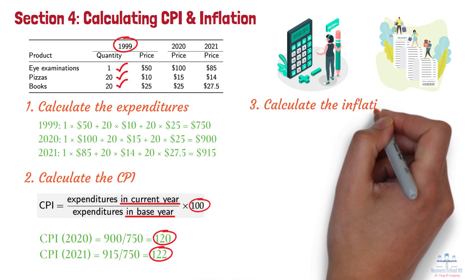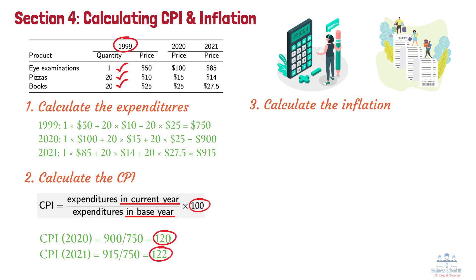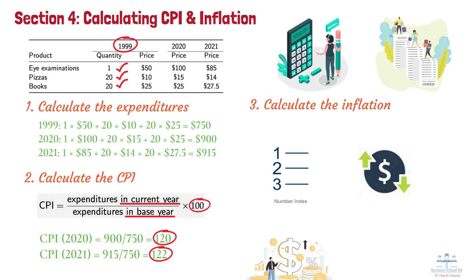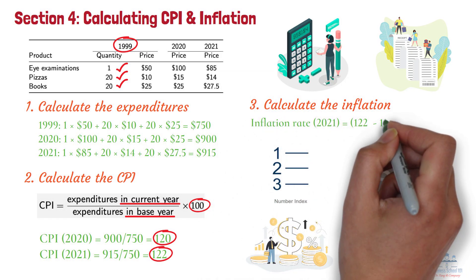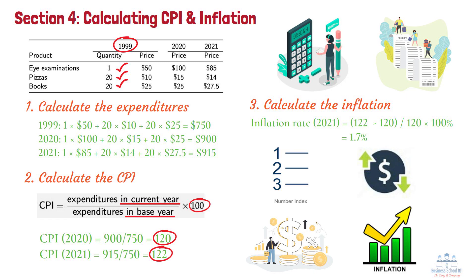Number 3: Calculate the Inflation. CPI values are index numbers — they are not measured in dollars or any other units. The CPI measures changes in the price level over time; it tells us how much the price level has changed, not how high it is in an absolute sense. We measure the inflation rate as the percentage increase in the CPI from one year to the next. For our simple example, the inflation rate in 2021 is the percentage change in the CPI from 2020 to 2021, which is 1.7%. Because the CPI is designed to measure the cost of living, we can also say that the cost of living increased by 1.7% during 2021.